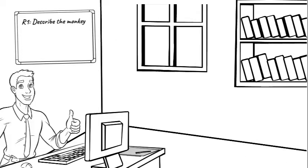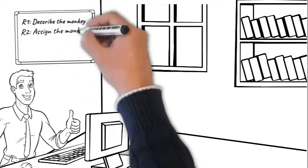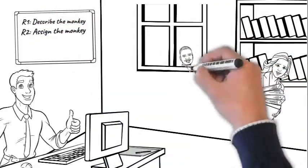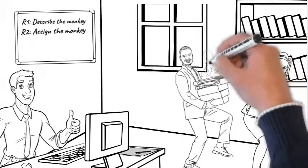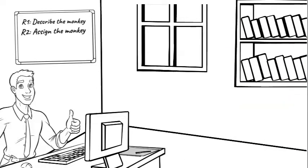Rule number two. Assign the monkey. All monkeys shall be owned and handled at the lowest organizational level consistent with their welfare. Or in other words, every monkey belongs to someone, so find the owner.